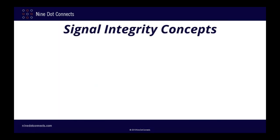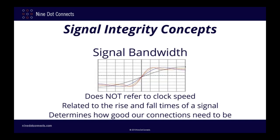At this point, we need to delve into some of the signal integrity and simulation concepts we'll need in order to correctly generate our data and interpret the results in a meaningful manner. The first concept I would like to introduce is that of signal bandwidth. Signal bandwidth does not relate to the clock speed or communications bandwidth, but rather to the frequency spectrum associated with the transition of a signal from one voltage level to another. This is one of the most basic and important concepts in the field of signal integrity.